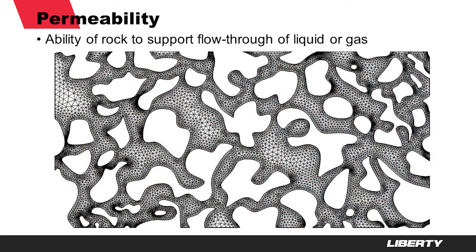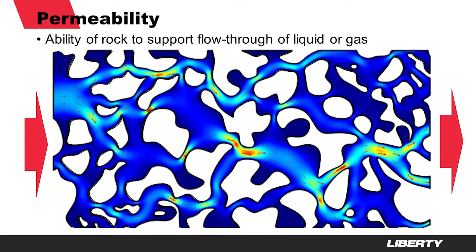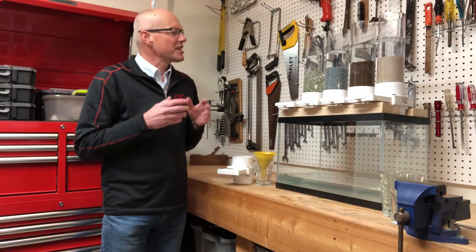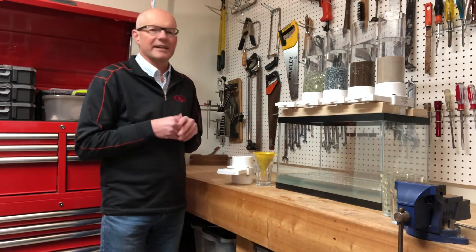Permeability in rock is the ability to flow liquids and gases through pores. This first picture is a representation of pores in dark colors around grains in white. This overlay shows flow velocities. Note that higher velocities are possible in wider channels.